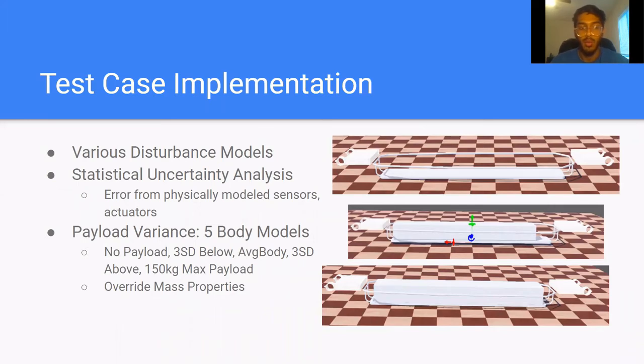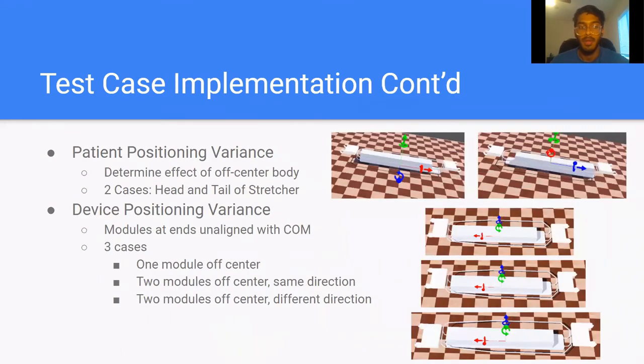We implemented various test cases for our system to run in WEBOTs. Along with our library of disturbance models, we also ran a multi-trial uncertainty analysis based on noise and errors from our physical sensors and actuators. We also tested our disturbances on all five body models with different inertial situations, ranging from no payload to a maximum payload of 150 kilograms, to evaluate the robustness of our system and controller. We also varied the location of the patient in the stretcher to see the effect of the inertial imbalance. This included two cases where the head and the feet of the patient are at either end of the stretcher. Finally, we varied the location of the modules at the end of the stretcher to account for imperfect installation. This included a case where one module is off-center from the center of mass, a case where both modules are off-center in the same direction, and one where both modules were off-center in different directions. All of these test cases were performed to ensure our controller was robust in a variety of scenarios.